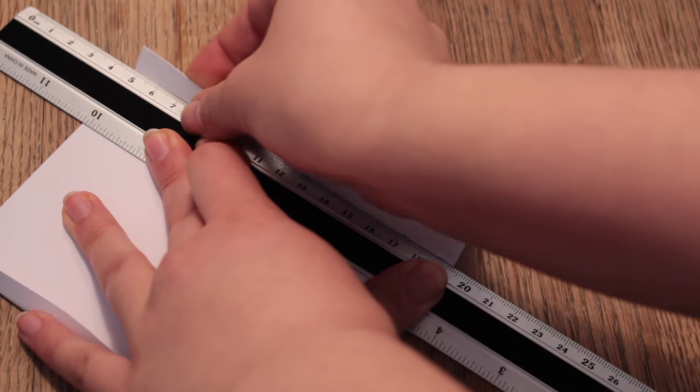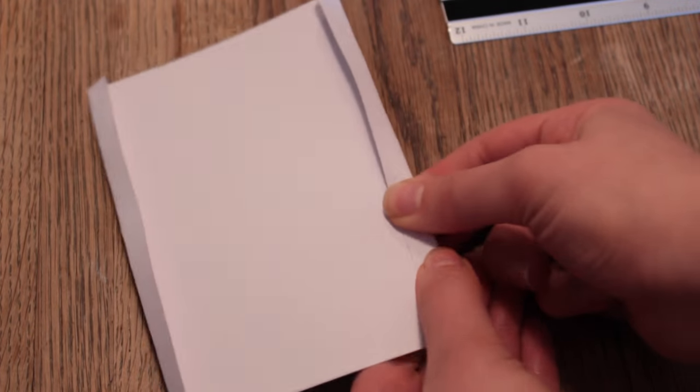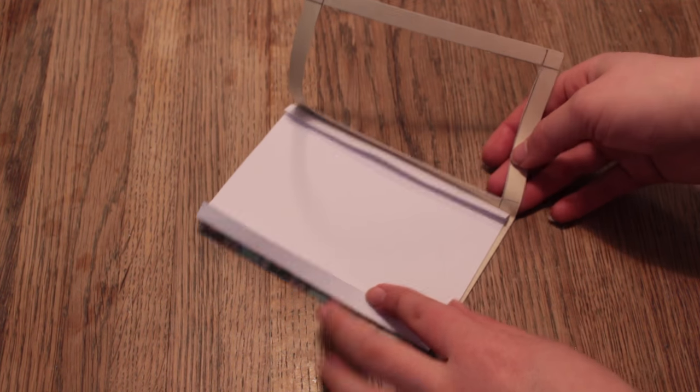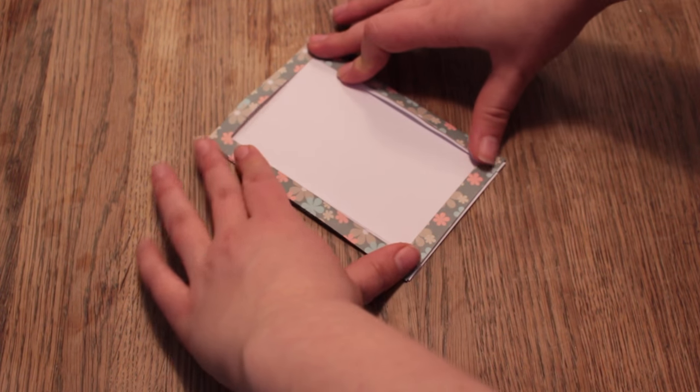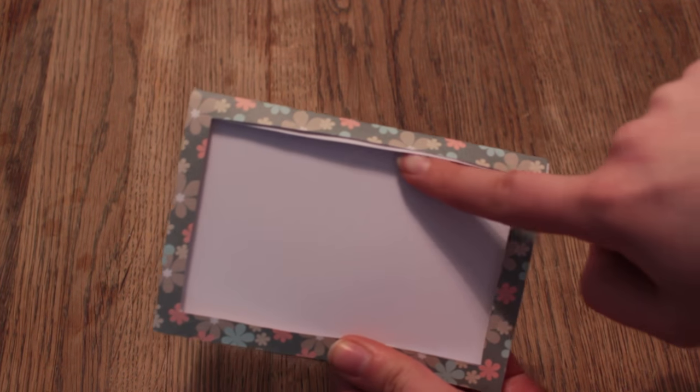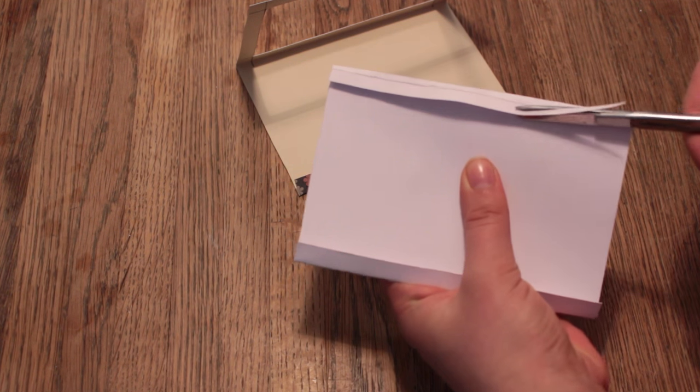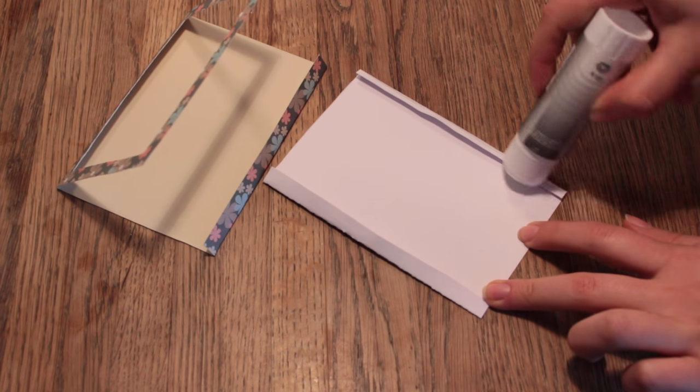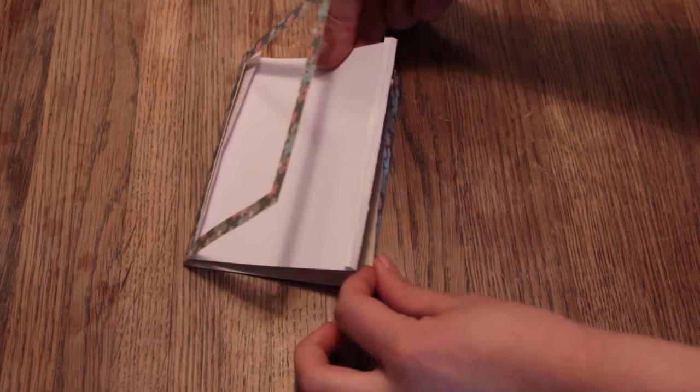Then place it inside the frame to see where it fits. If a small amount is showing, just cut a few millimeters off. Then put some glue on the small flaps and place it inside the card once again, then glue the flaps to the frame.